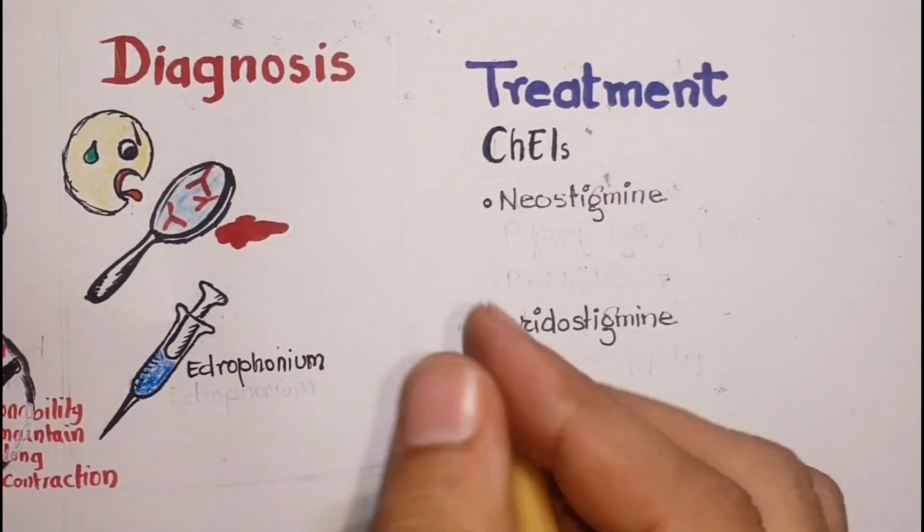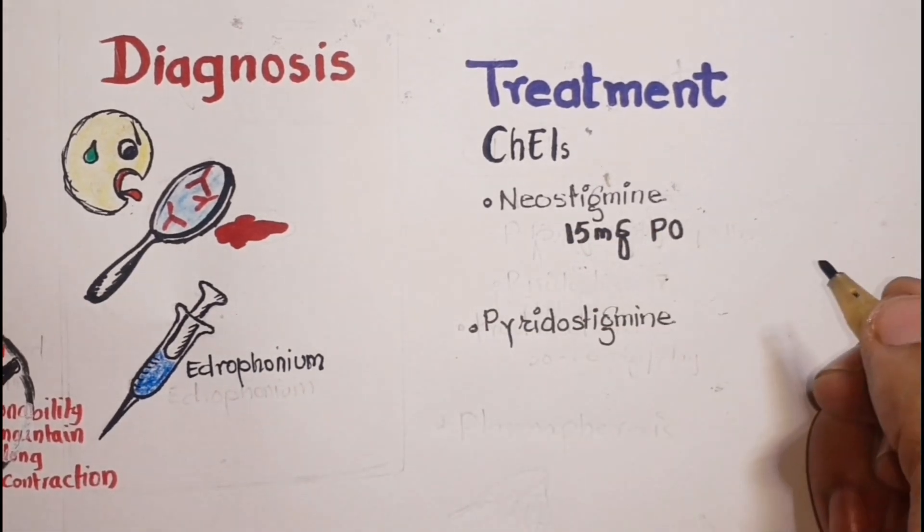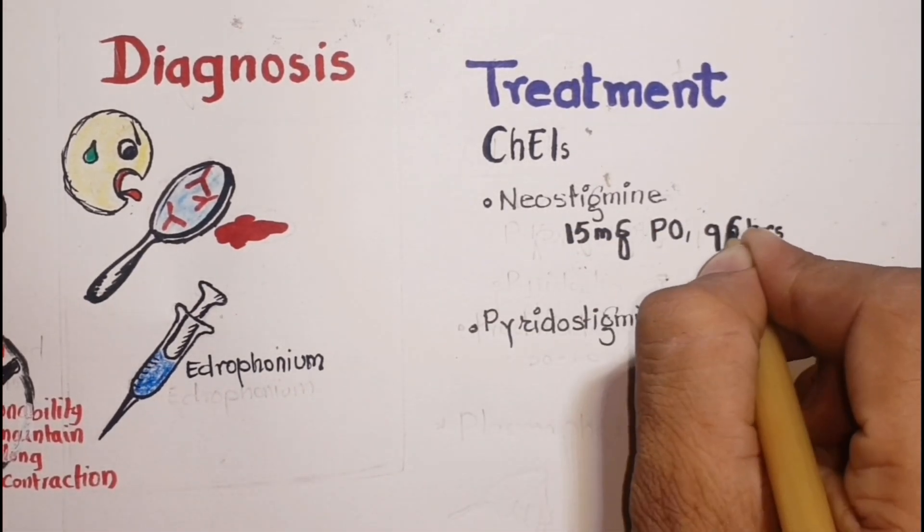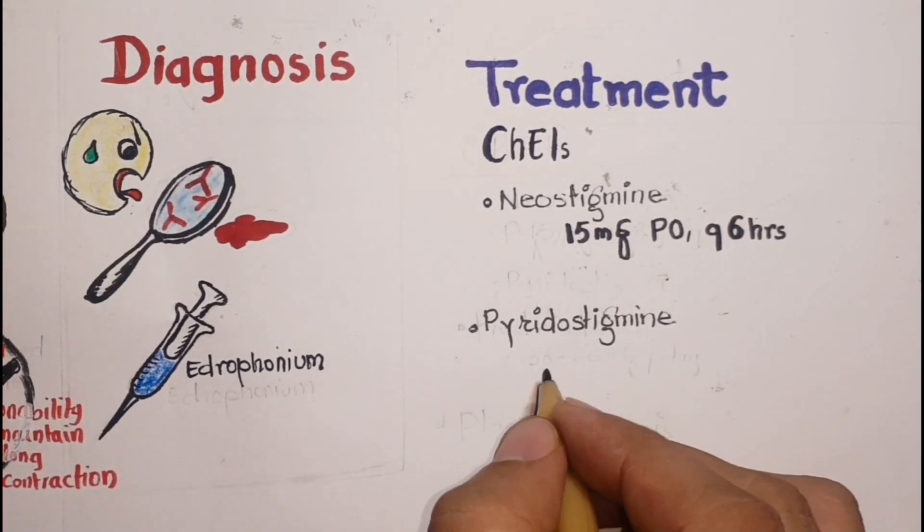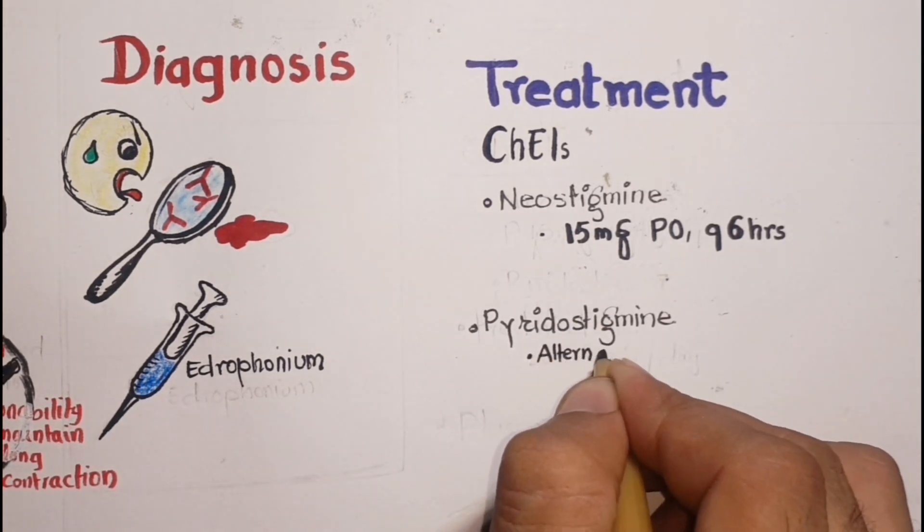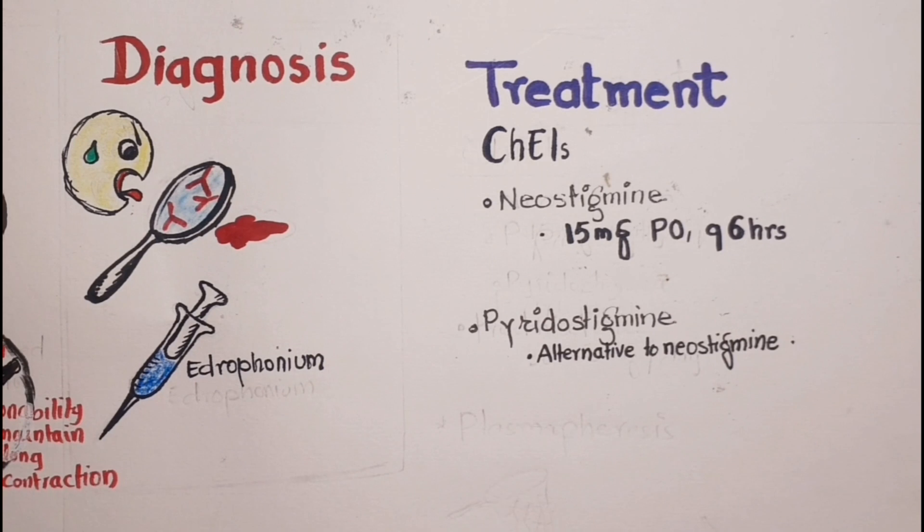Neostigmine is used as 15 mg orally after every six hours but can be adjusted according to the condition. While pyridostigmine is an alternative to neostigmine and requires less frequent dosing.